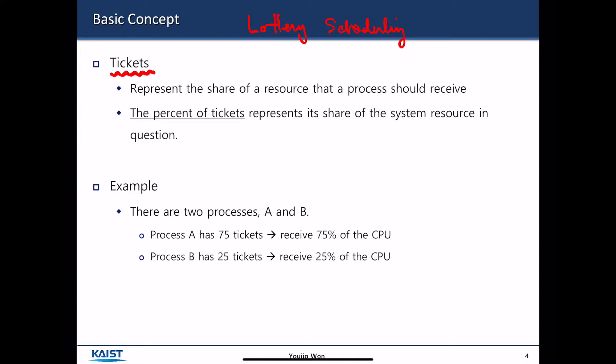For example, I assume that there are two processes, and there are a total of 100 tickets. And process A has 75 tickets, and process B has 25 tickets.